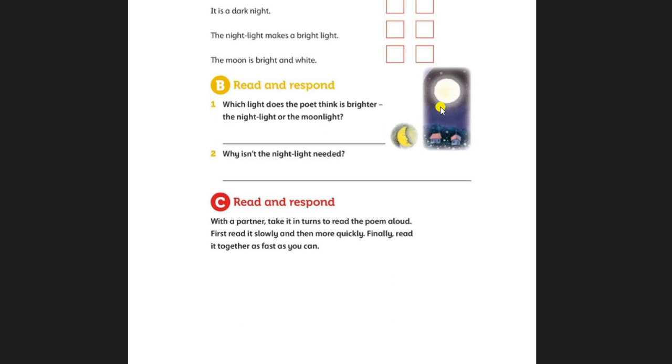With a partner take it in turns to read the poem aloud. You can even do it alone. First read it slowly and then more quickly. Finally, read it together as fast as you can. But you shouldn't be giggling, laughing, or stumbling over letters.